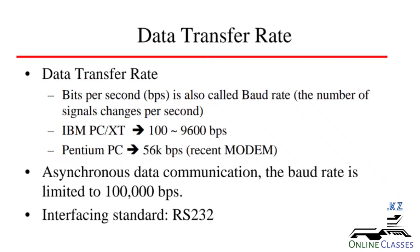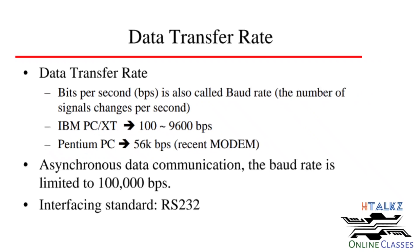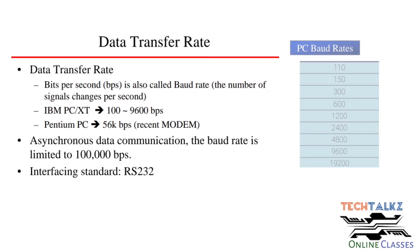The number of bits transmitted per second is the bit rate. The number of signal changes per second is the baud rate. In this case, bit rate and baud rate are the same. Baud rate is expressed in bps — bits per second. Different baud rates are supported.